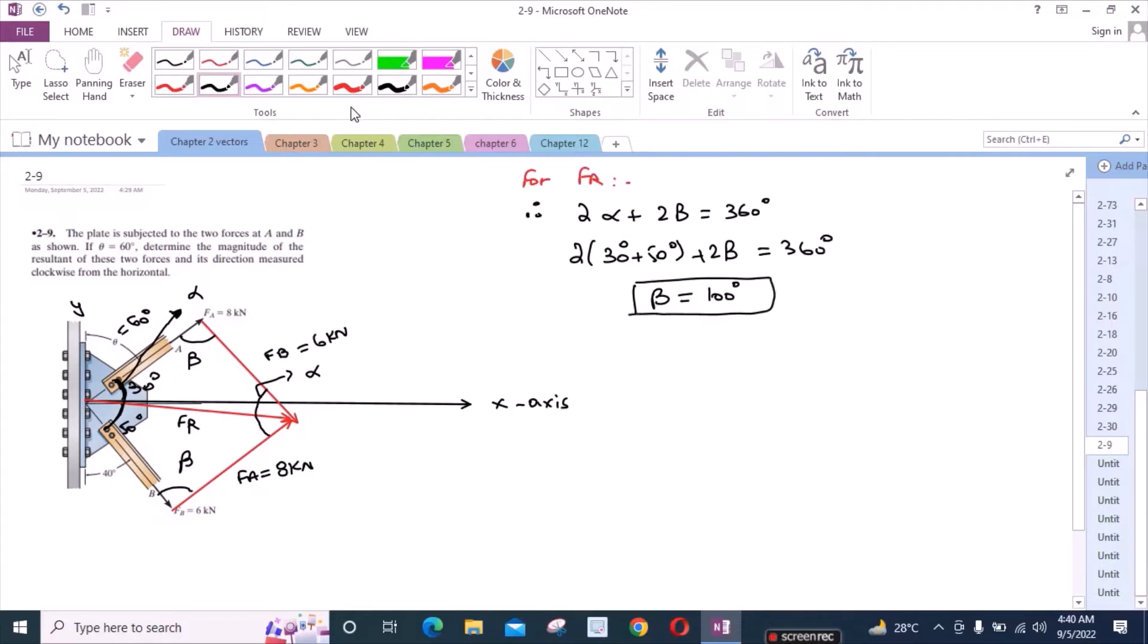Now we can use the cosine law to find the resultant force. FR equals the square root of 6 squared plus 8 squared minus 2 times 6 times 8 times cos 100 degrees. From here, FR equals 10.8 kN. This is our first answer.